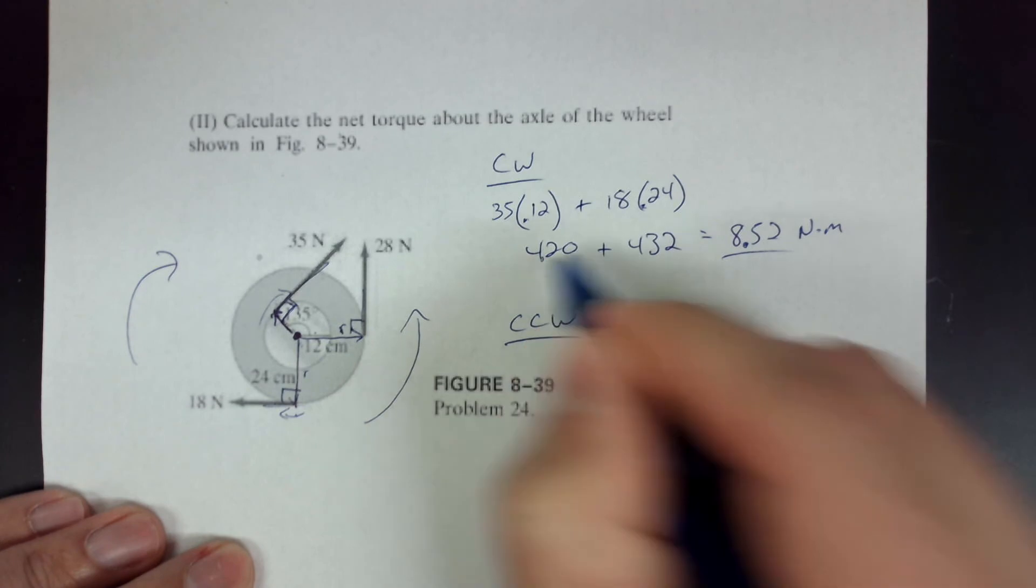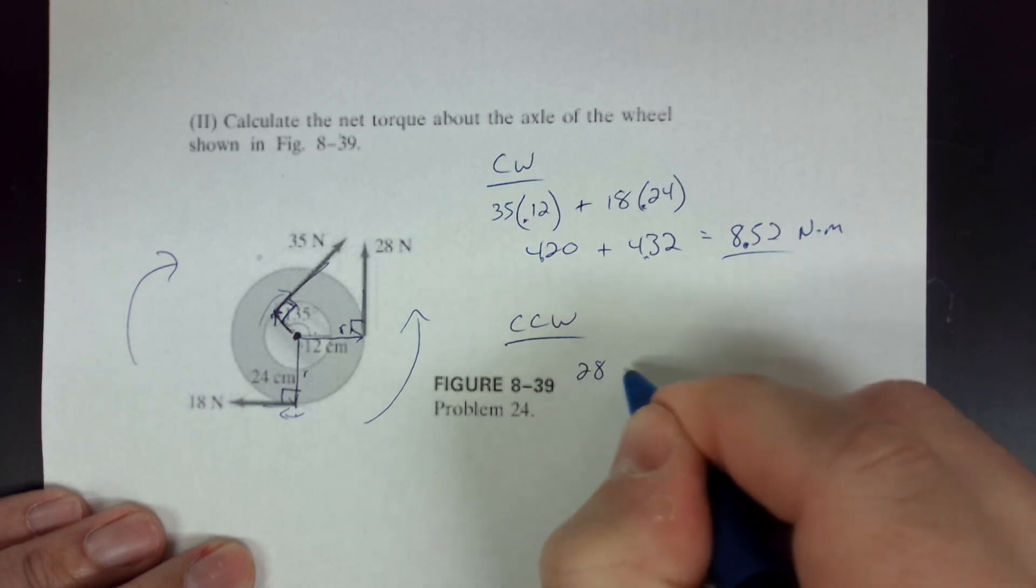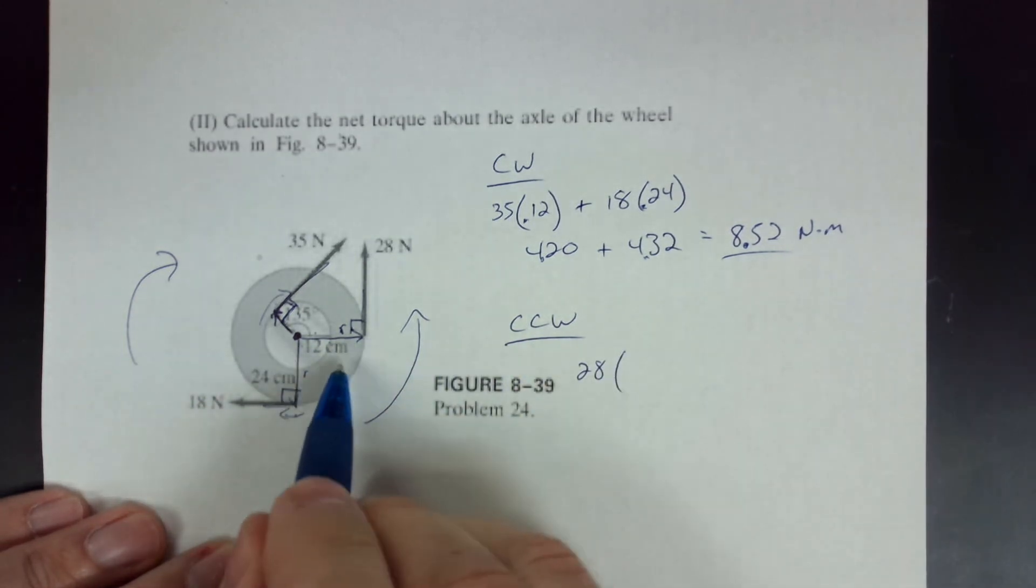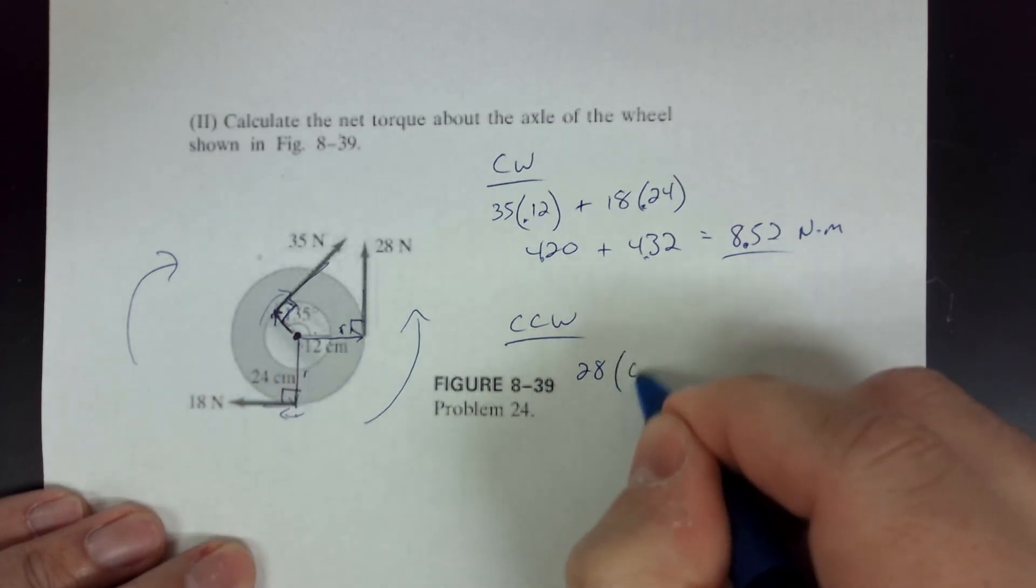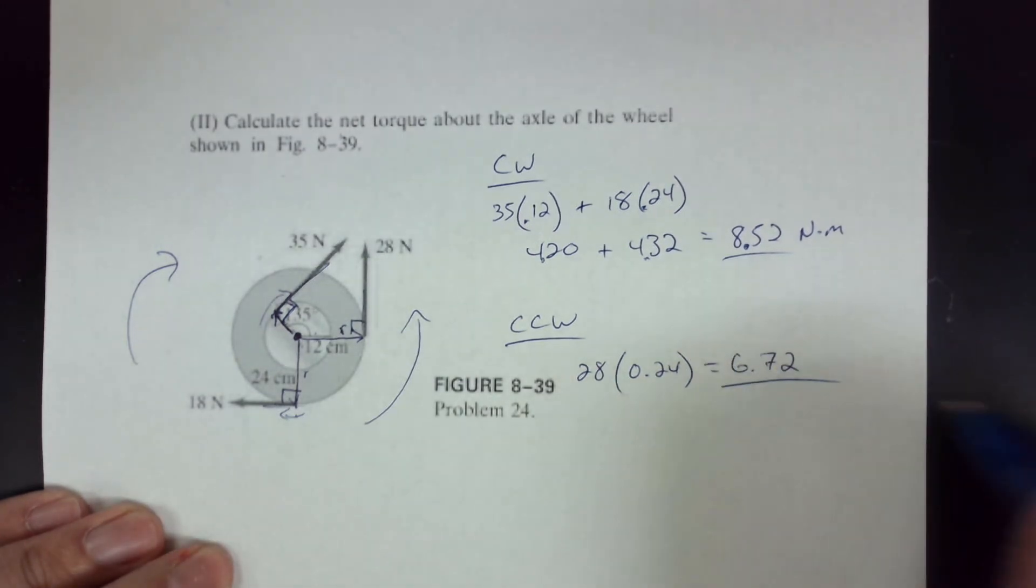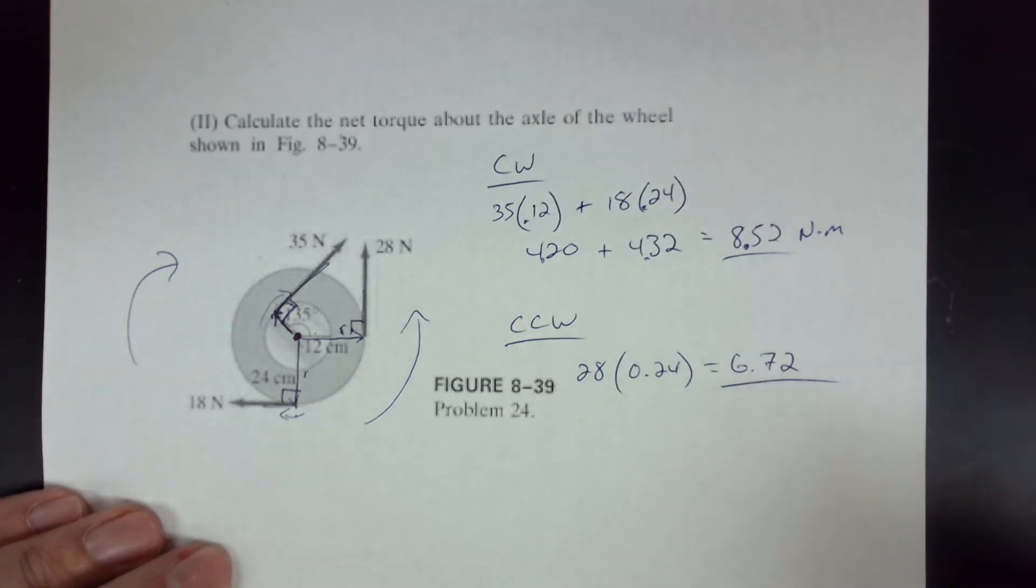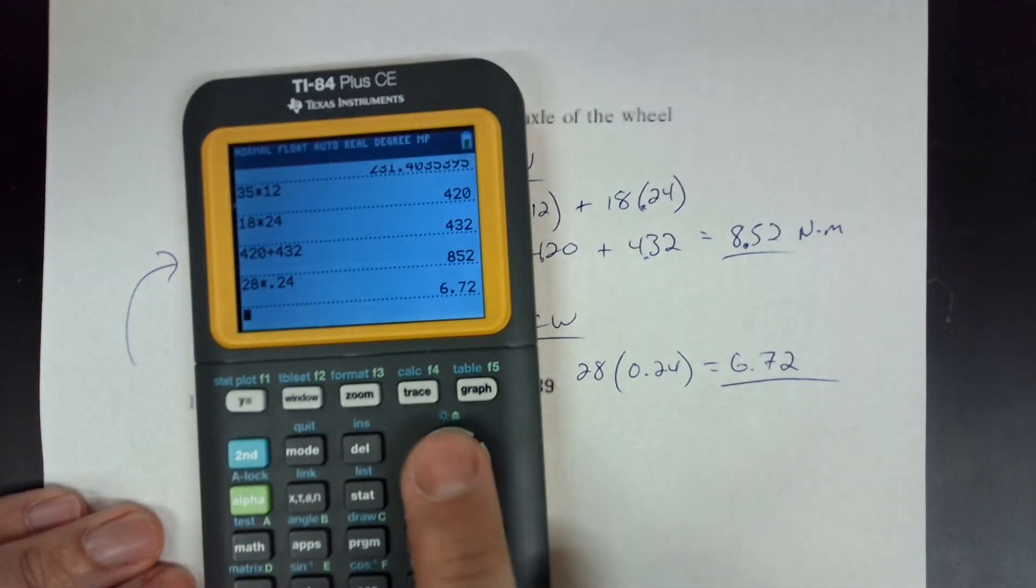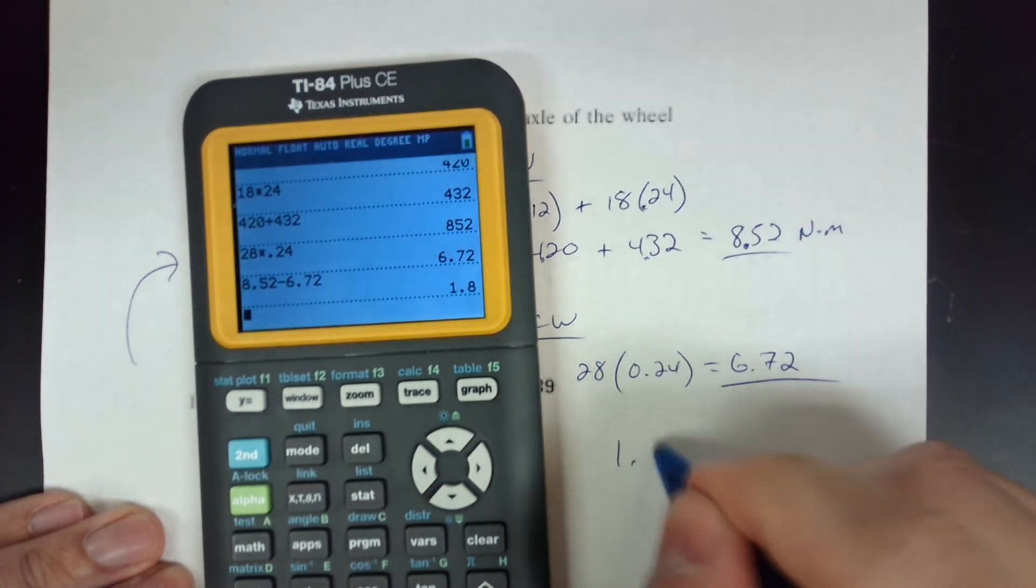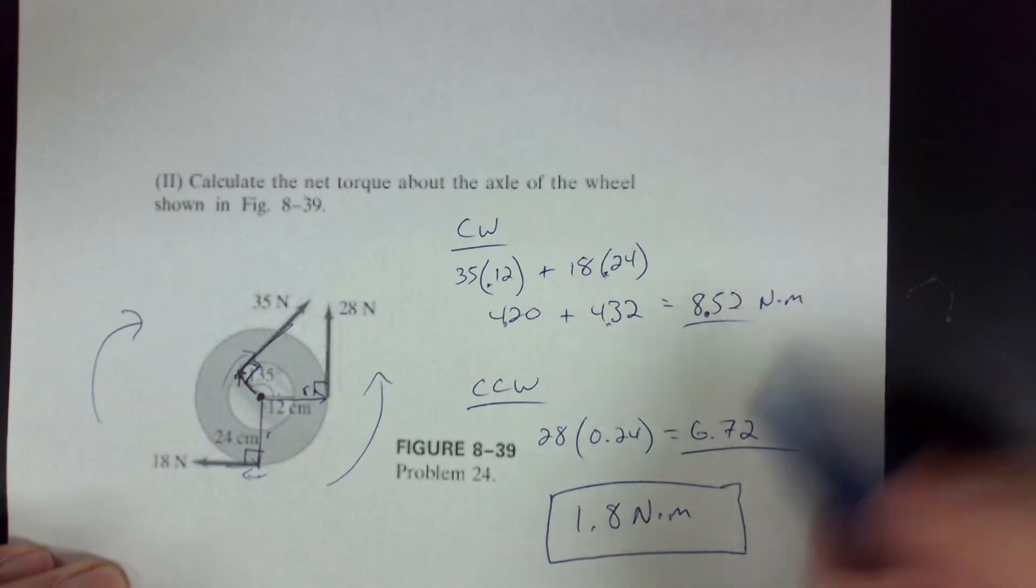Okay. So counterclockwise is just this one. So 28 newtons times r, which is 24 centimeters. Because it's going to the outside, 0.24. So 28 times 0.24 gives me 6.72. So I have 8.52 going clockwise, 6.72 going counterclockwise. You can tell immediately this one is larger. So my net torque is just going to be the difference. So 8.52 minus 6.72. My net torque is 1.8 newton meters. And it's in the clockwise direction.